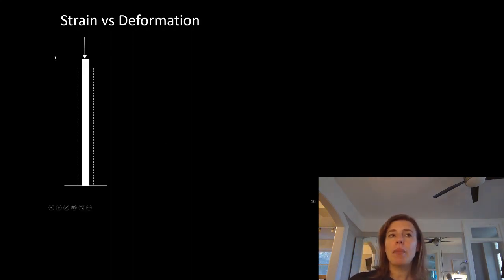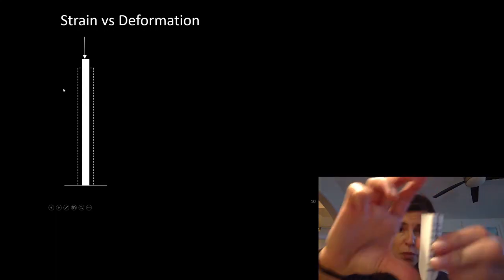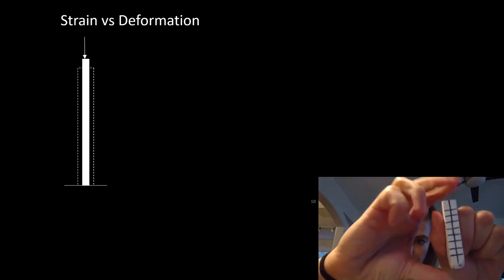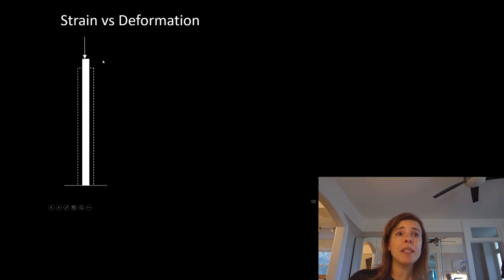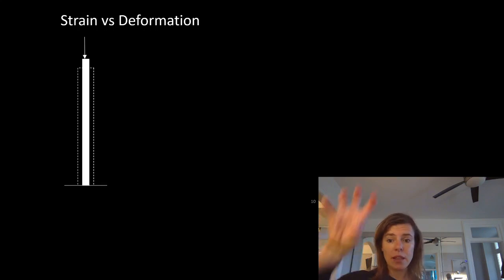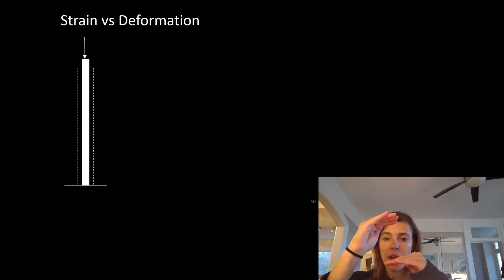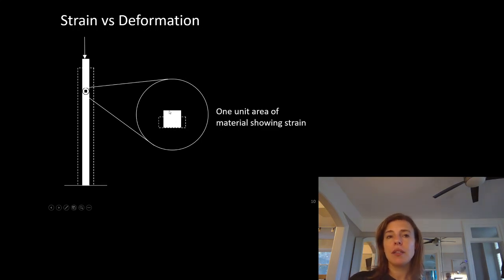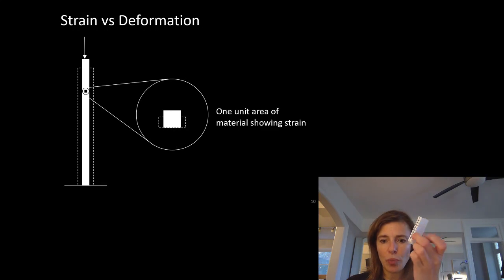Strain: if we have some unknown force, we're not even going to talk about what the force is — it causes some deformation to this object. When you squish a material, you can see all the little squares compress a little bit. It's not flying off into space, not spinning, not going up and down — there is internal deformation. Strain talks about a unit area or unit volume of that material. If we cut some internal piece out of this eraser, that's what we're talking about. Stress is defined as the force per unit area.